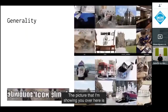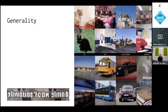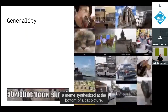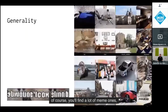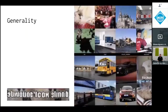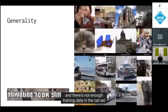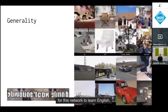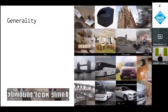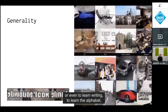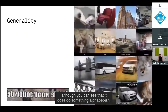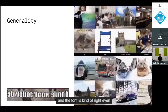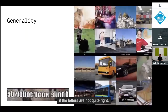The picture shown here is a meme synthesized at the bottom of a cat picture. In cat images on the internet, there's not enough training data for the network to learn English or even the alphabet — though you can see it does something alphabet-ish, with the font kind of right even if the letters aren't quite right.